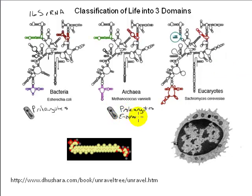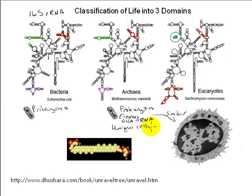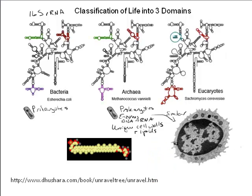Other bits of molecular evidence included the fact that the molecular machinery archaea use to copy DNA to RNA is more similar to that found in eukaryotic cells. The cell walls of archaea have a different composition from bacterial cells, and their cellular membranes have phospholipids with many unique features not found in either bacteria or eukaryotes.